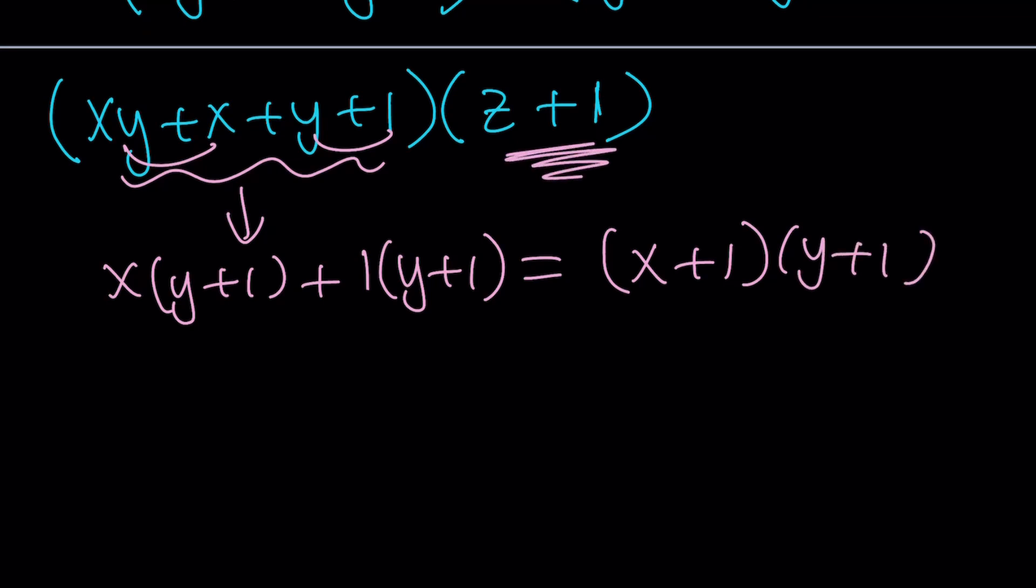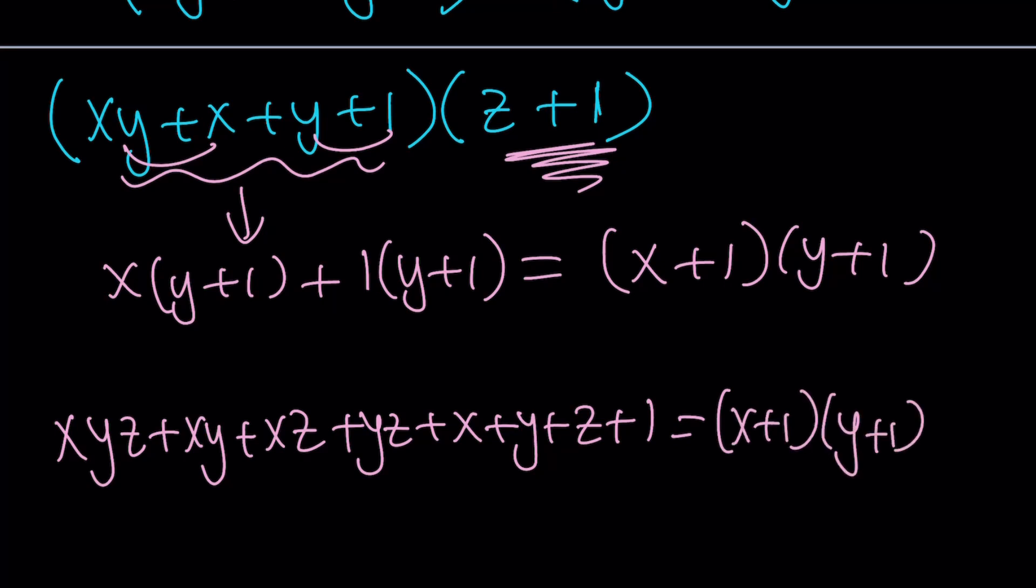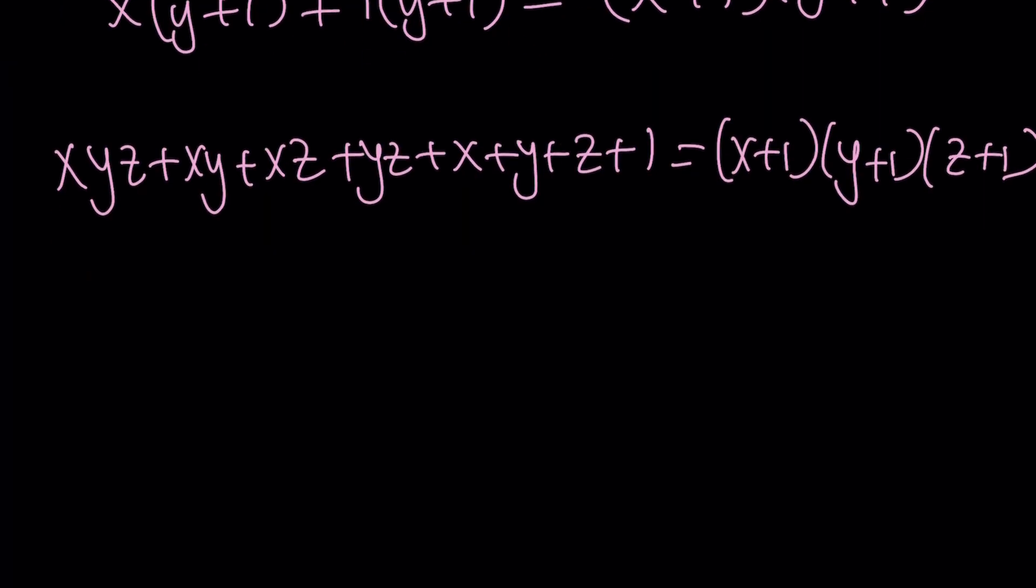And now, we'll just attach the z plus 1. Well, if you look at the first factor, it's also factorable by grouping. x times (y + 1) and 1 times (y + 1). And that is equal to (x + 1)(y + 1). If you just attach the z plus 1 to it, you're going to get (x + 1)(y + 1)(z + 1). If you don't believe that, go ahead and multiply and you'll get the same thing.